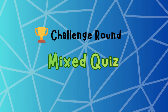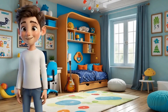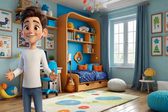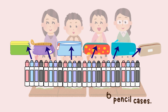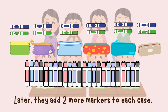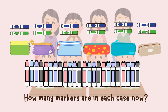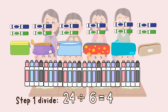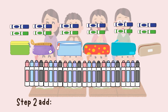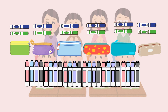Challenge round — mixed quiz! Final challenge: I'll give a problem and you try without peeking. Ready? A class has twenty-four markers. They share them equally into six pencil cases. Later, they add two more markers to each case. How many markers are in each case now? Step one: divide — 24 divided by six is four markers in each case. Step two: add — four plus two equals six markers in each case. So each case now has six markers. Wow, you nailed it!